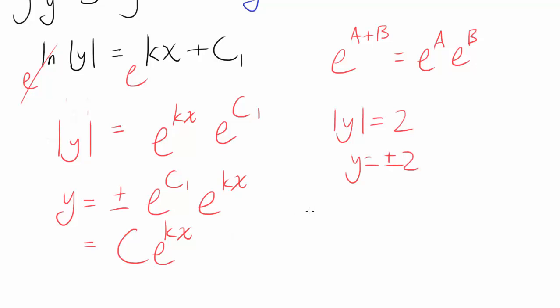So the entire thing becomes constant C and you have e^(kx). So we have it. What's our solution to y' = ky? Our solution is y = Ce^(kx). And that's it.